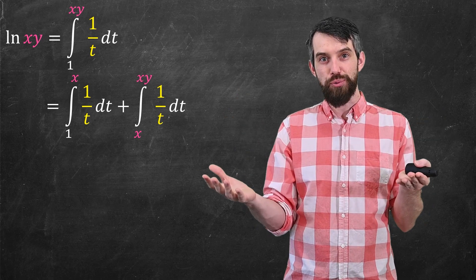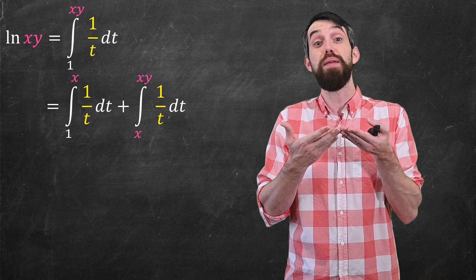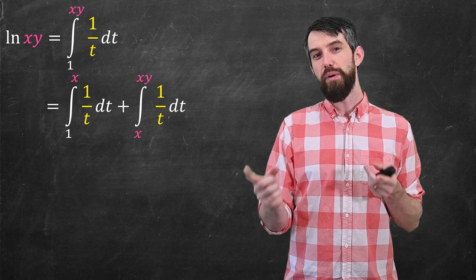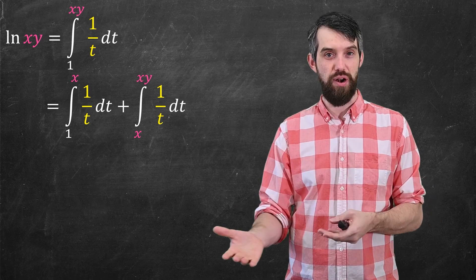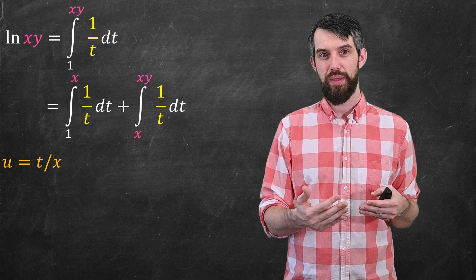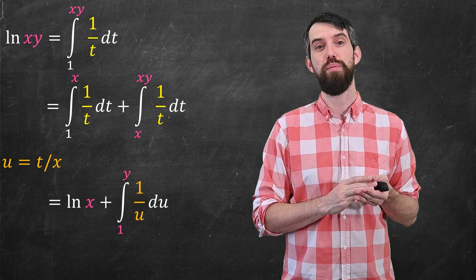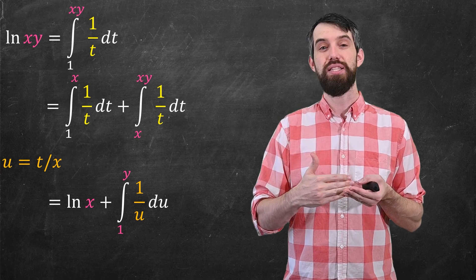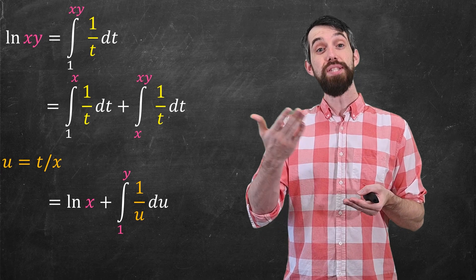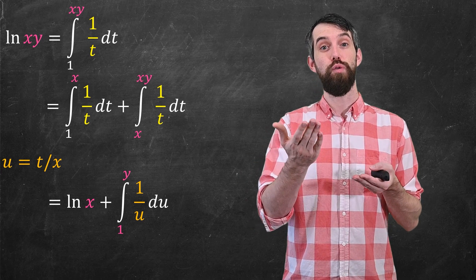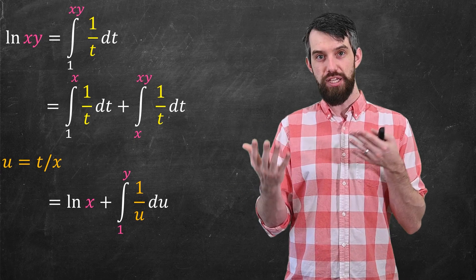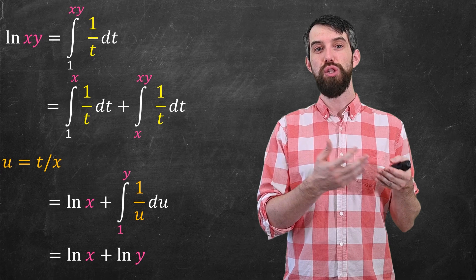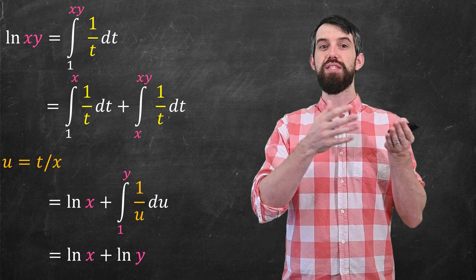An integral over a larger region can be broken up as the sum of two integrals over smaller regions as long as they meet in the middle. The first integral from 1 to x is just the definition of logarithm of x. For the second, I apply the change of variables u equals t divided by x. When t equals x, the lower limit becomes 1; when t equals x times y, the upper limit becomes y. The integrand turns into 1 over u du, which is just the definition of logarithm of y. So we've concluded that the logarithm of x times y equals logarithm of x plus logarithm of y.